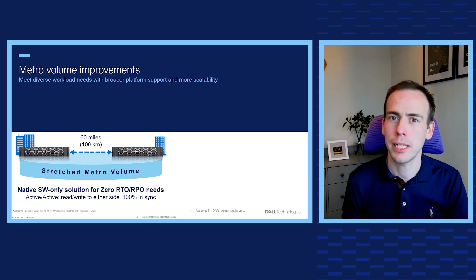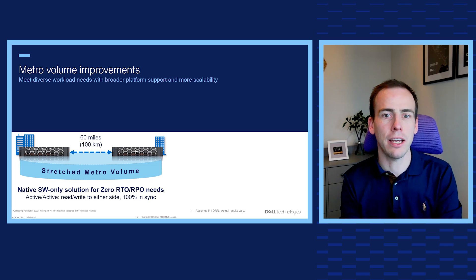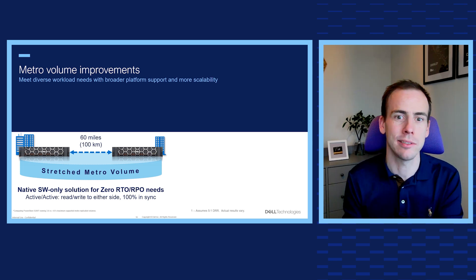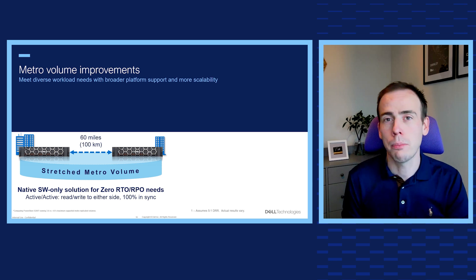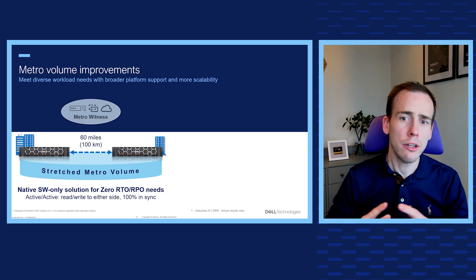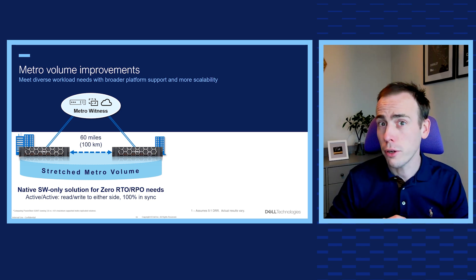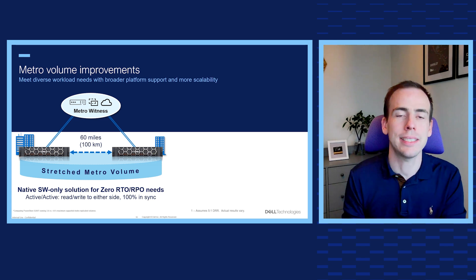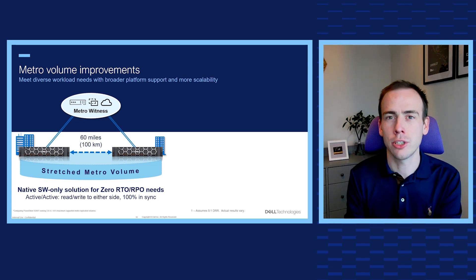PowerStore's native metro replication — metro volume — creates a highly available active-active storage environment across a metro area distance with no additional equipment or software purchase required. In our previous release we added a third site witness, deployable in the cloud or another fault domain, that prevents a split-brain scenario and automates recovery from either array without any manual intervention.